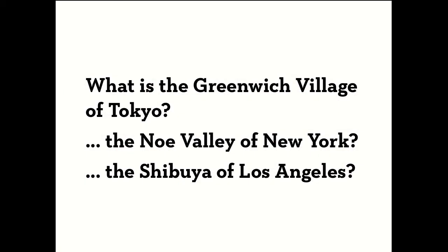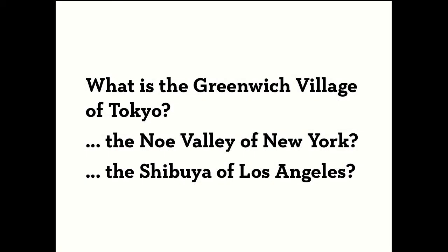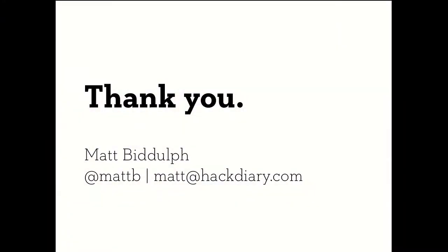But perhaps you like more interesting parts of town. I like Hackney in London and other parts of San Francisco. So we could interrogate this place graph and ask: what's the Greenwich Village of Tokyo? What's the Noe Valley of New York, the Shibuya of Los Angeles? Can we create place isomorphisms — find the mutually equivalent neighbourhoods across cities — and make cities more enjoyable to visit and easier to use? Perhaps you'd like to come and work with me on this. Come talk to me later. Thank you very much.